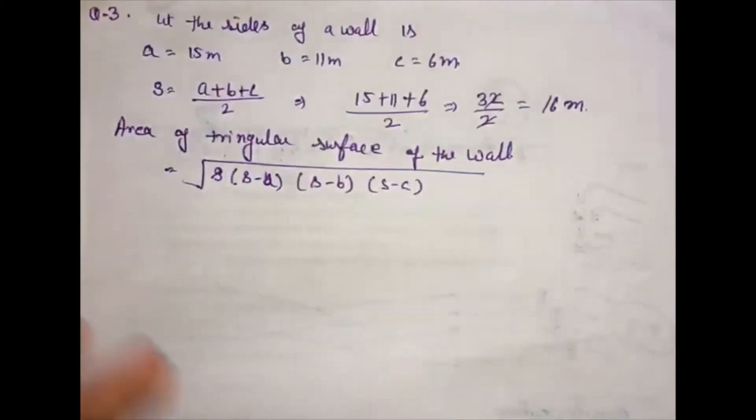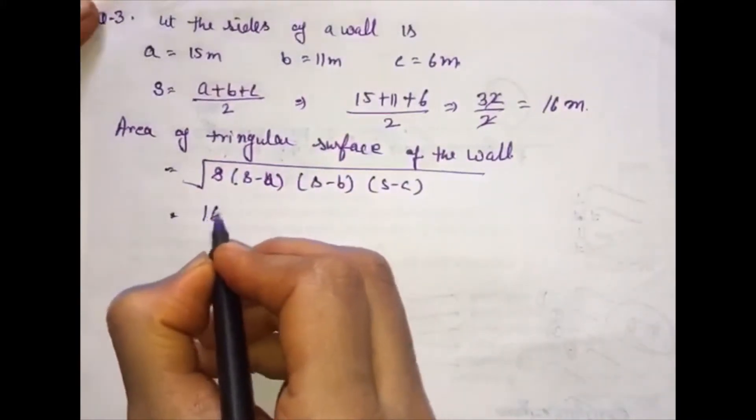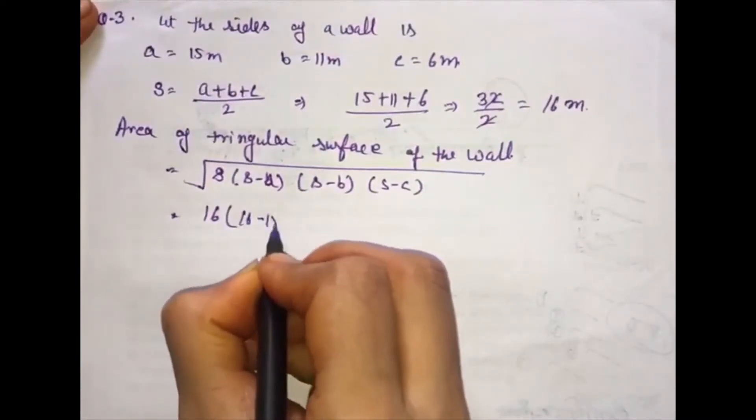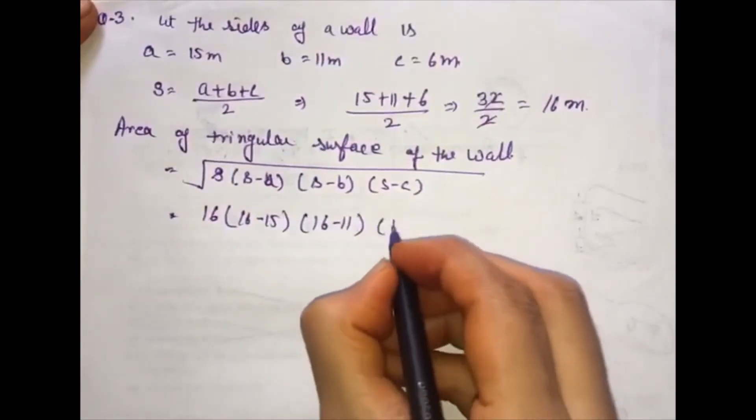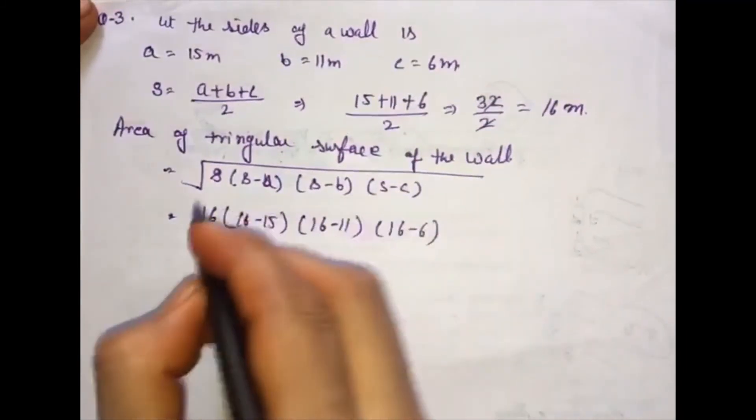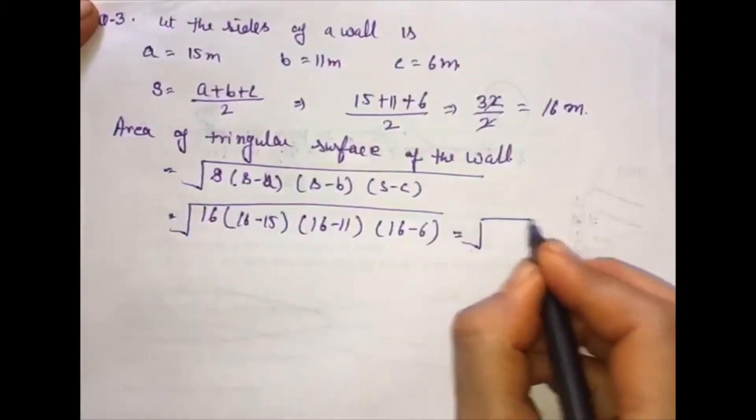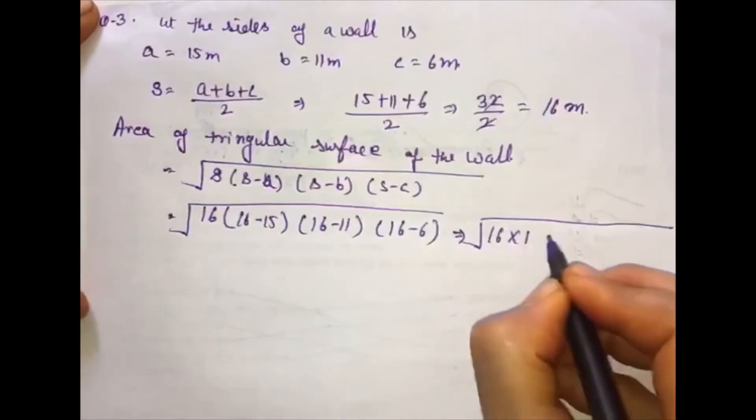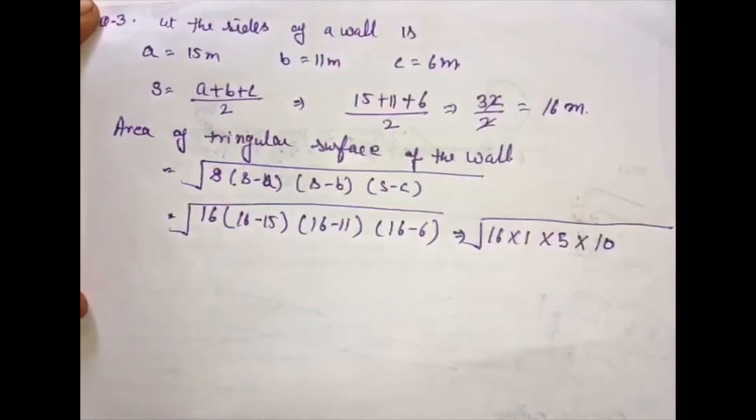All values are available, so we put them: square root of 16 minus 15, times 16 minus 11, times 16 minus 6. This equals square root of 16 multiply 1, multiply 5, multiply 10.